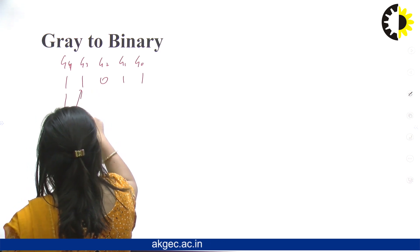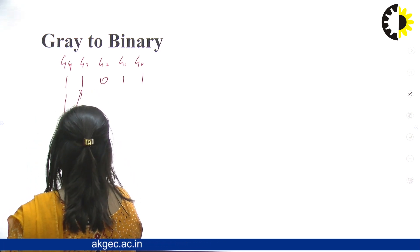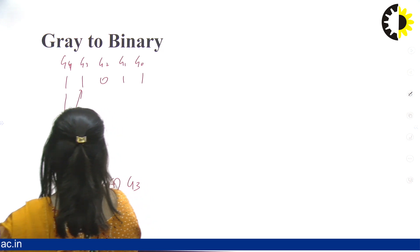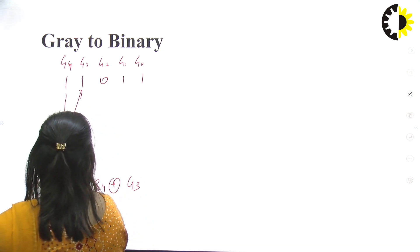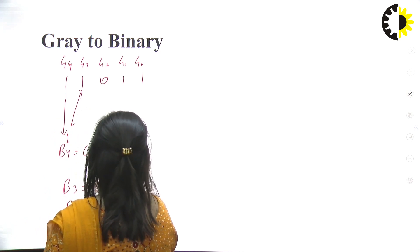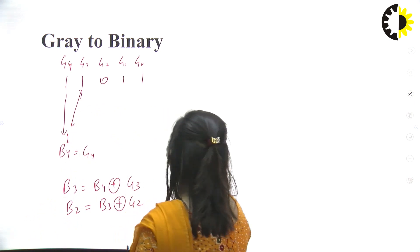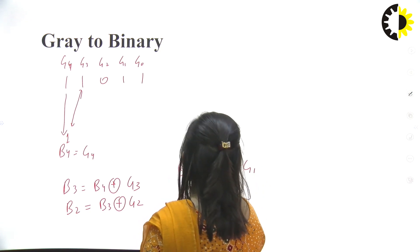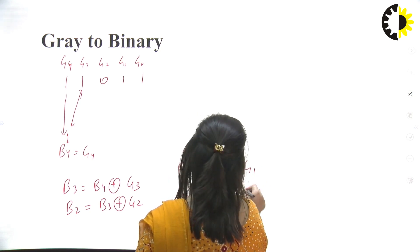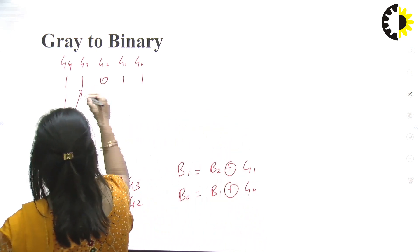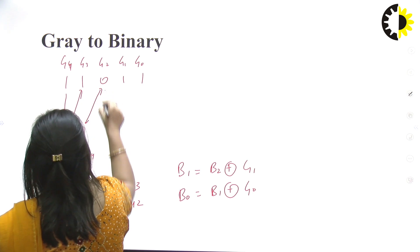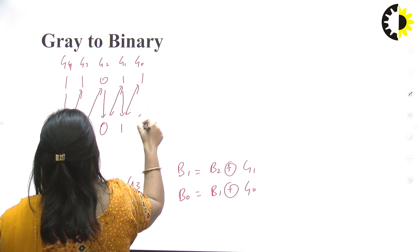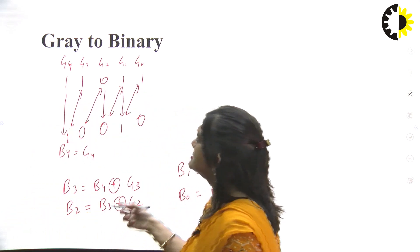Then B3 = B4 XOR G3, B2 = B3 XOR G2, B1 = B2 XOR G1, and B0 = B1 XOR G0. Computing: 1 XOR 1 = 0, 0 XOR 0 = 0, 0 XOR 1 = 1, 1 XOR 1 = 0. The answer is 1, 0, 0, 1, 0.